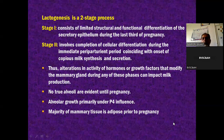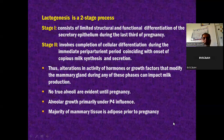Any alterations in the activity of hormones or growth factors that modify the mammary gland during time can impact milk production. Since these are all hormonally influenced, the whole physiology of this secretory epithelium is governed by different hormones - progesterone, estrogens, corticosteroids, growth hormones - and in stage second, prolactin is a very, very important hormone.